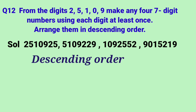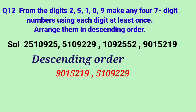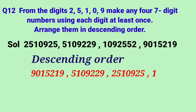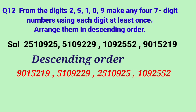Now let's arrange them in descending order. We compare the extreme left digits first: here it is 2, here 5, here 1, and here it is 9. So the greatest one is 9, meaning the greatest number is 90,15,219. The next number is 51,09,229. Next is 25,10,925. And the last one is 10,92,552.